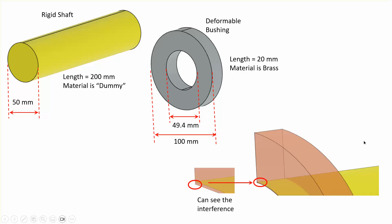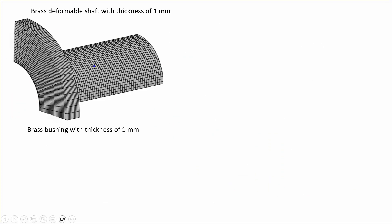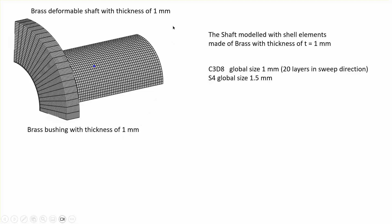Dimensions are taken from that reference. Because the hole is slightly smaller than the shaft there is an overlap visible at the bottom left. Brass is the material, assuming elastic behavior, with a coefficient of friction of 0.1 between the two parts. Due to symmetry only one-eighth of the model is used. The shaft is meshed with shell elements of roughly 1 mm size, and the bushing with linear brick elements also of 1 mm size.